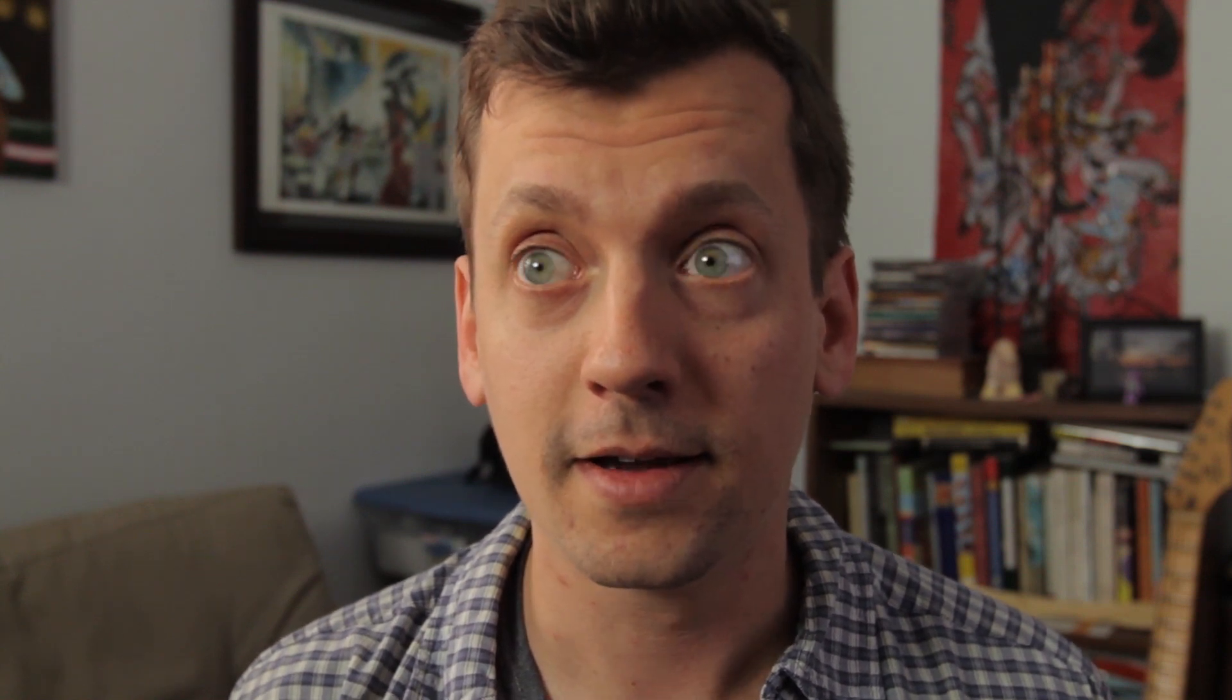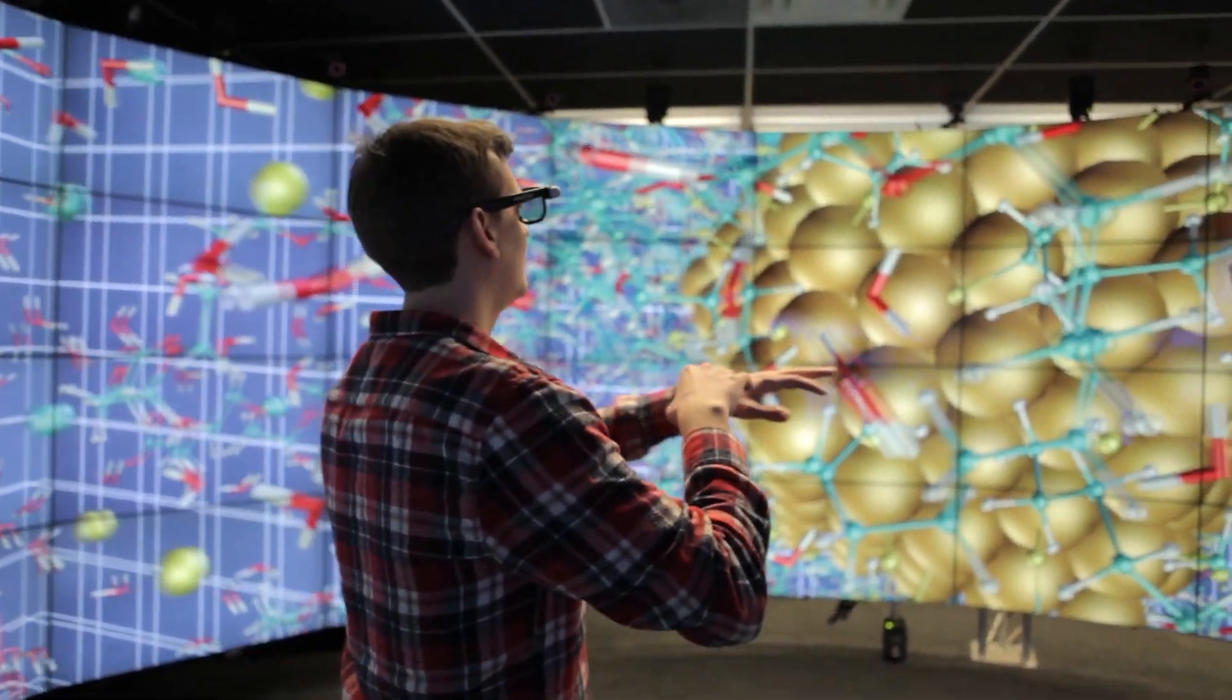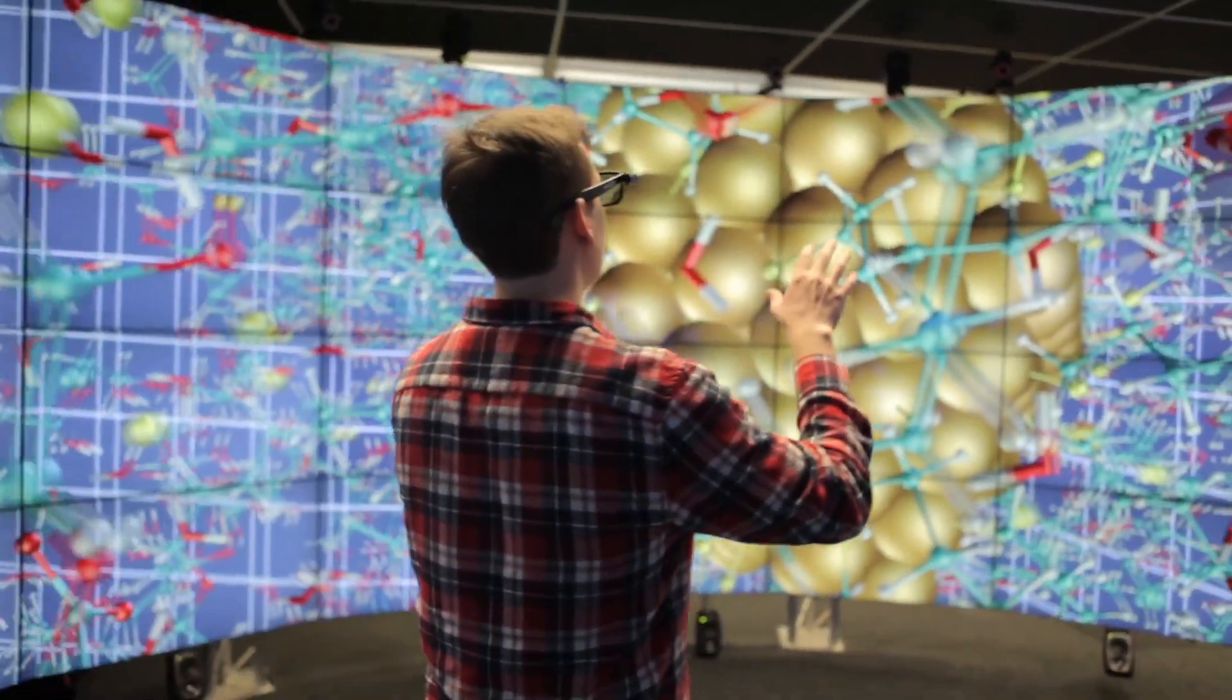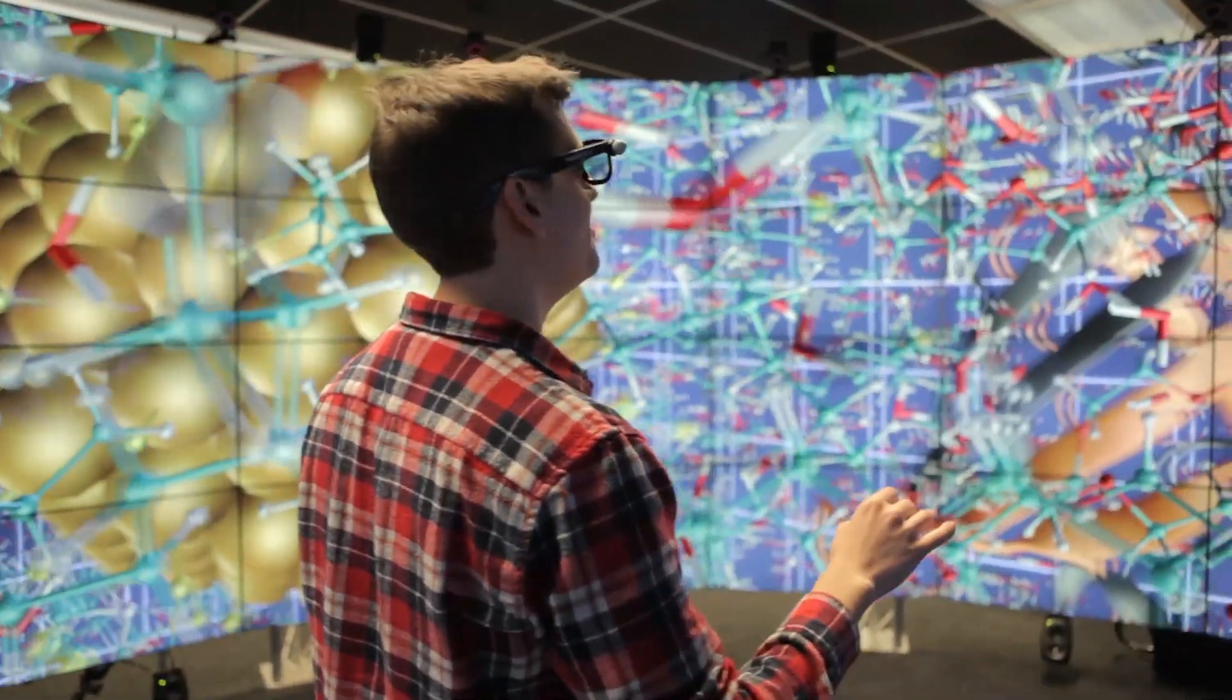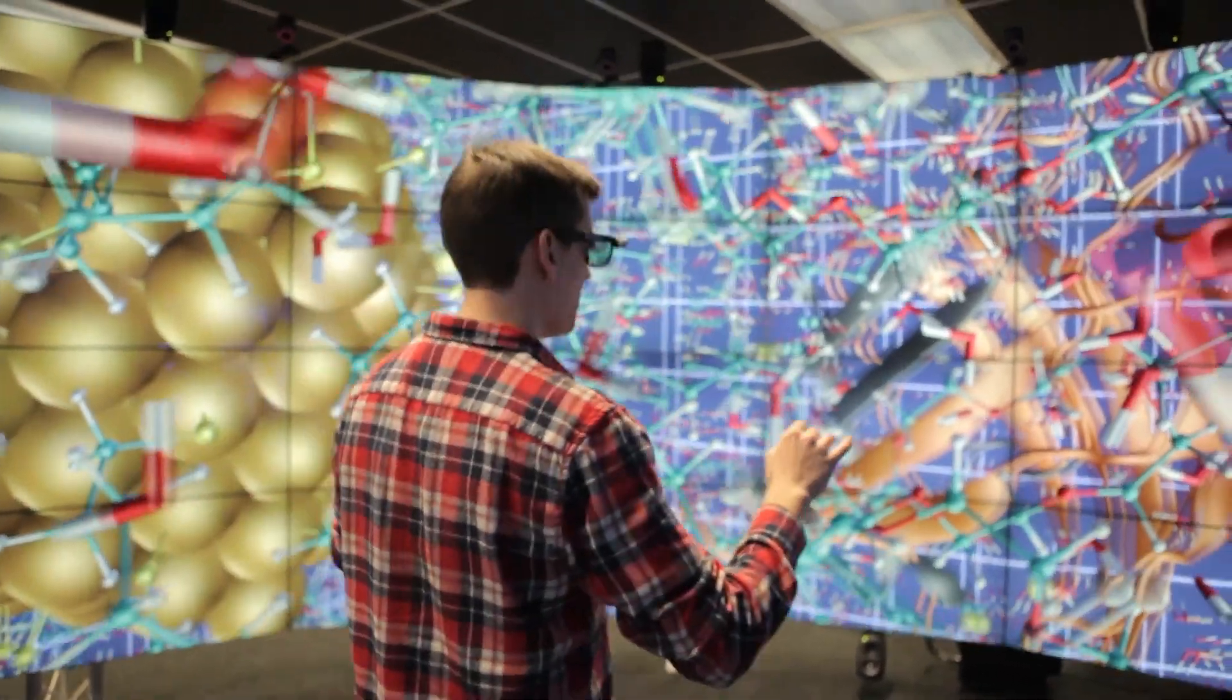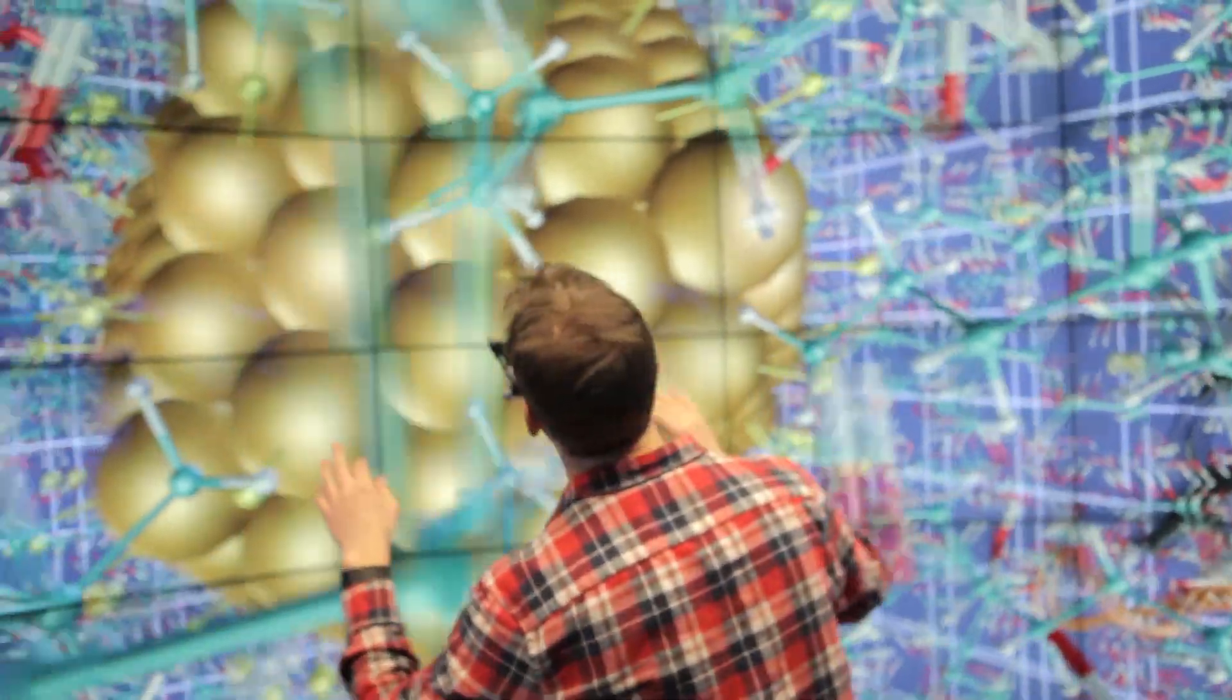So this probably looks kind of weird on camera, but to me it looks like there's this thing right here. There's not. Oh, like it's around you. Yeah. In fact, you gotta try this because this is pretty cool. That's me fumbling my way through a 3D representation of molecules in an ionic solution.